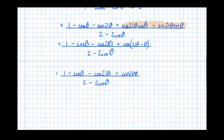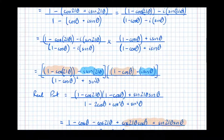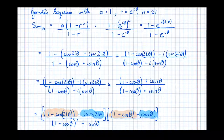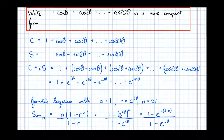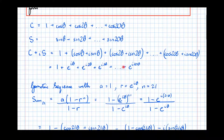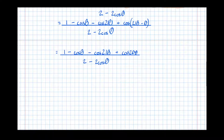This is a much more compact expression than the original 21-term series. To be completely clear: this real part is what we were asked to sum. We computed C plus iS in order to turn it into a geometric series, keeping in mind that C was the real part. Once we had the compact expression at the end, we extracted just the real part and simplified using the compound angle formula and trig identities to arrive at this four-term expression over (2 minus 2 cos θ).